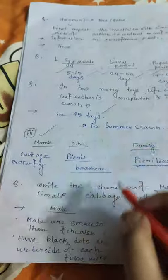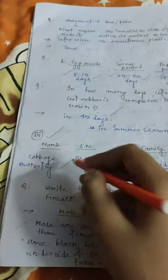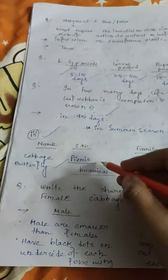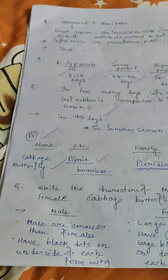The third insect pest is the Cabbage Butterfly. Scientific name is Pieris brassicae, family Pieridae, order Lepidoptera.